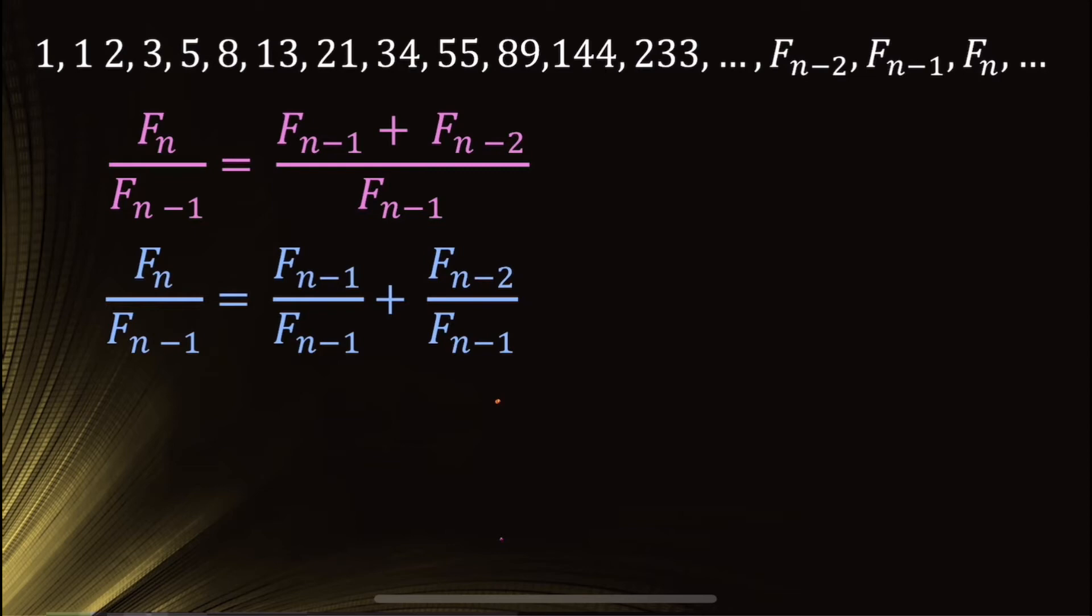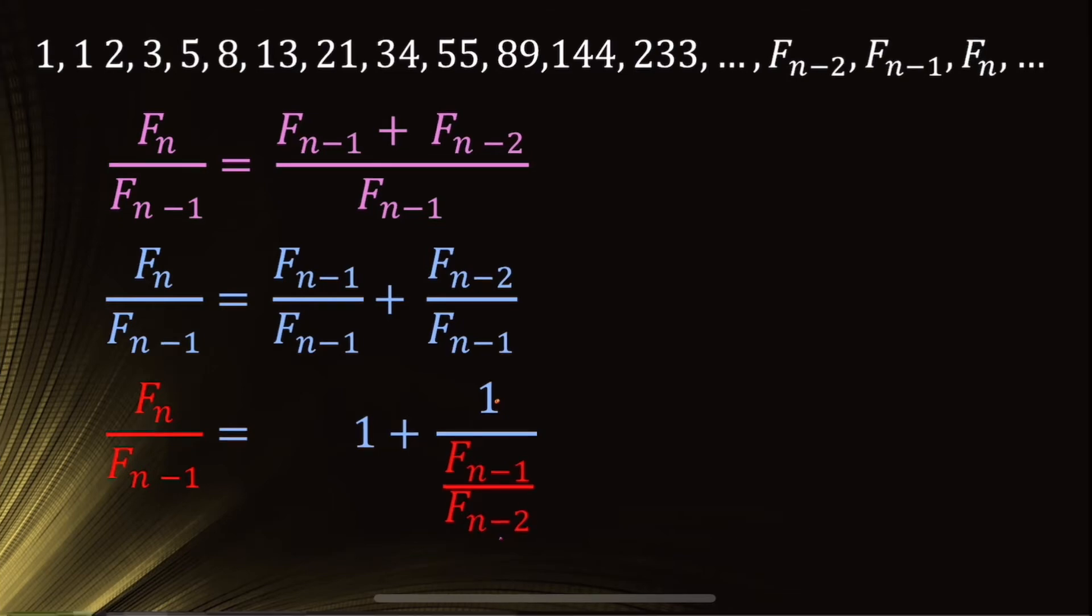And now we can pull apart this fraction and write it as two fractions separately. That first one can actually just turn into a 1. And the second fraction, if we flip it over and say 1 over f sub n minus 1 divided by f sub n minus 2, we can make it look like this.